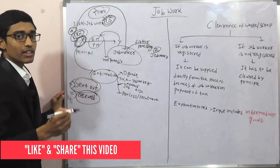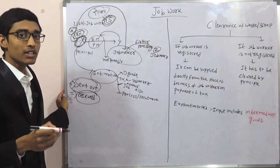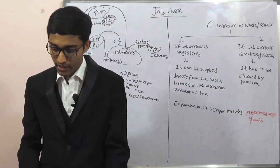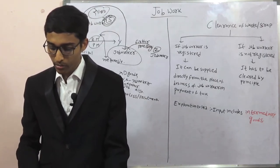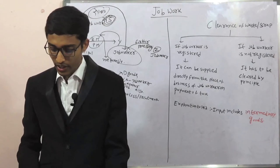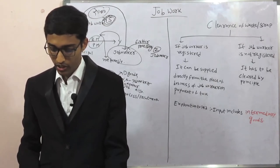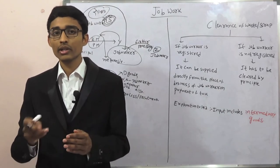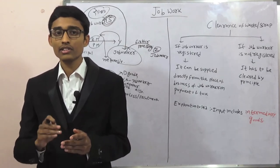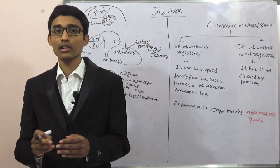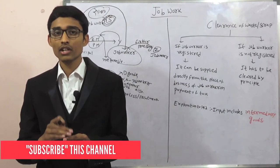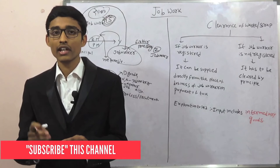You have to observe these small details in case of indirect taxation or direct taxation because interpretation is very important for DT or IDT. This 1 year or 3 years have to be counted from the date of receipt of input goods or capital goods by the job worker if the goods are directly sent by the supplier. This period of 1 year or 3 years is not applicable to molds, jigs, fixtures, or tools. In case of inputs, they have to be returned within 1 year; in case of capital goods, within 3 years; and in case of molds, jigs, and tools, this period is not applicable. If directly sent by the supplier, the period is counted from the date received by the job worker; otherwise, from the date they are sent out.